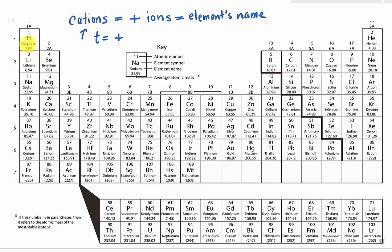So for instance, hydrogen 1 plus, we have the same name as hydrogen. Lithium 1 plus, we have also lithium. Or magnesium 2 plus is also equal to magnesium. So we take the name of the element on the periodic table.